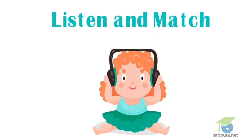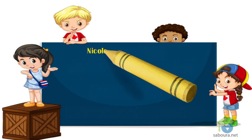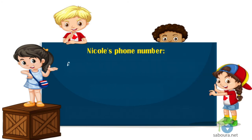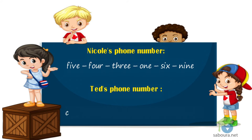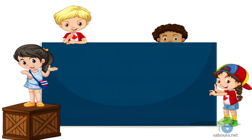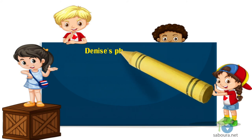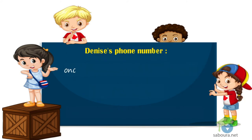Listen and match. Nicole's phone number: 5-4-3-1-6-9. Ted's phone number: 1-9-8-3-5-4-1-1. Dennis' phone number: 1-9-7-8-6-2.